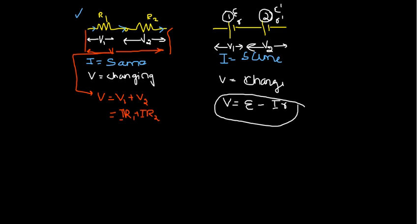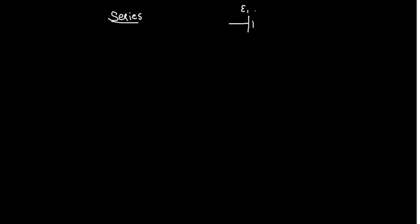Therefore, we are only focusing on series combination. Let us take two cells which are connected in series. Cell 1 has EMF E1 and internal resistance r1. Similarly, cell 2 is connected in series with cell 1, having EMF E2 and internal resistance r2. This is the network we are having.